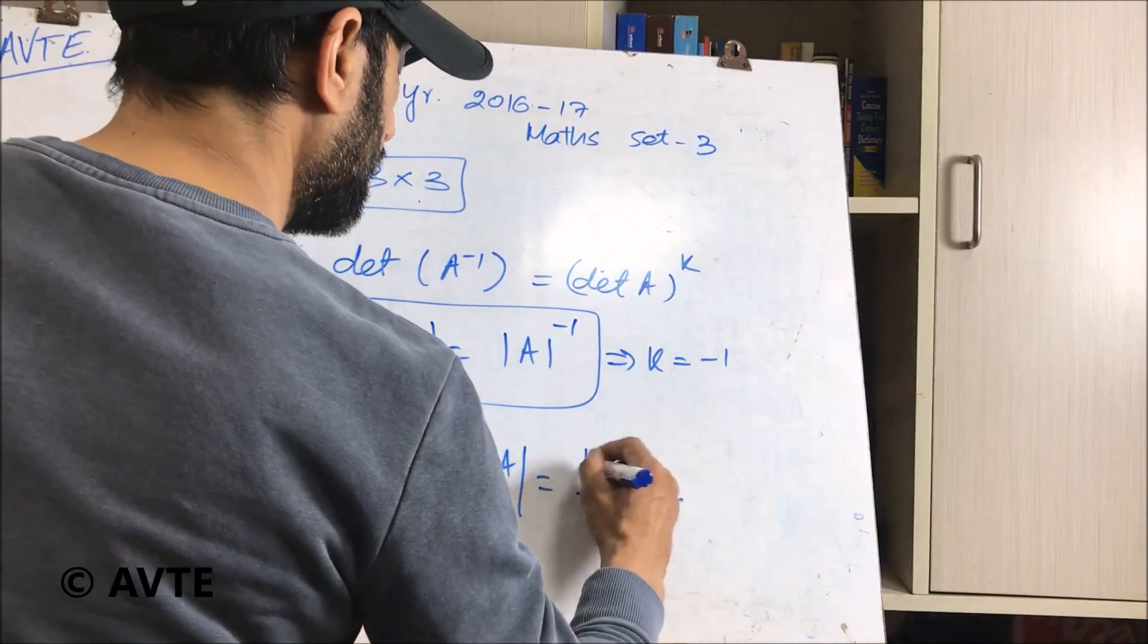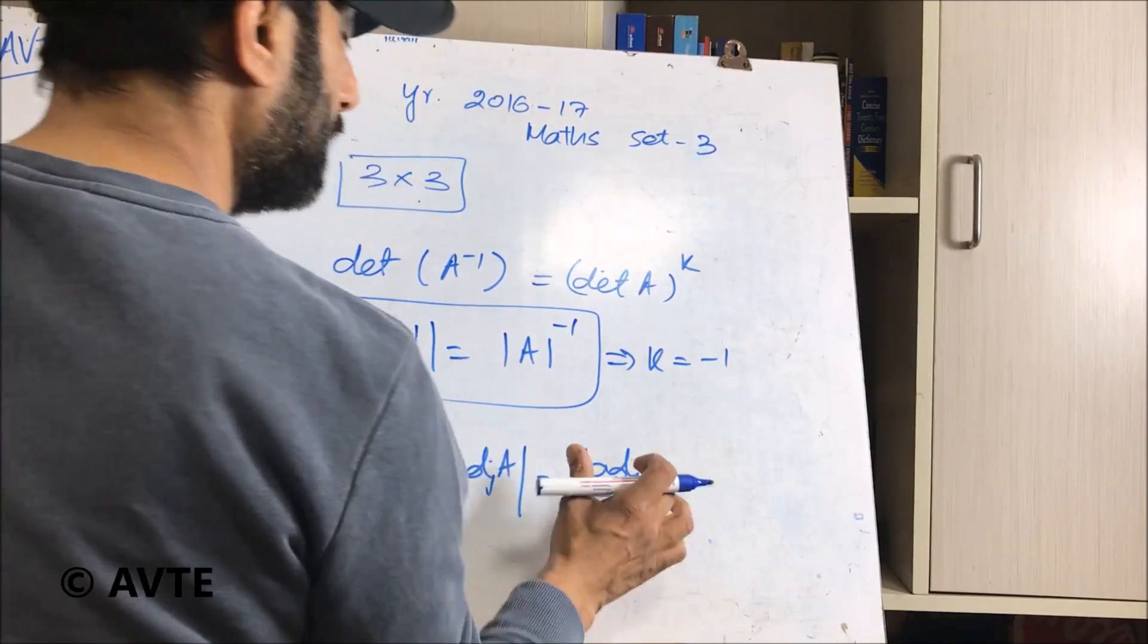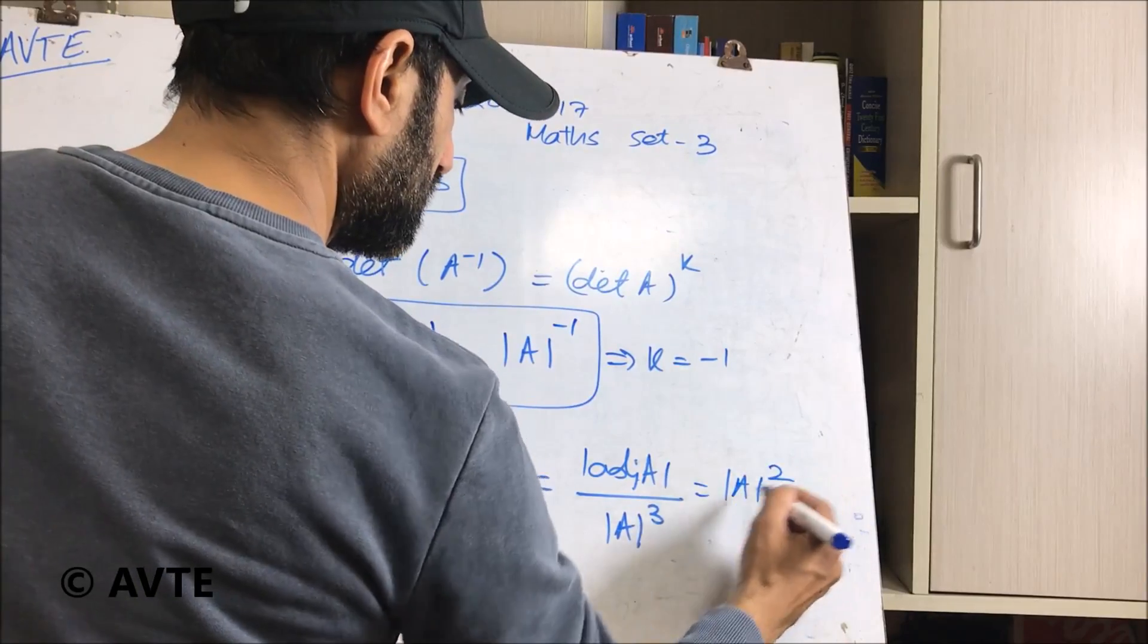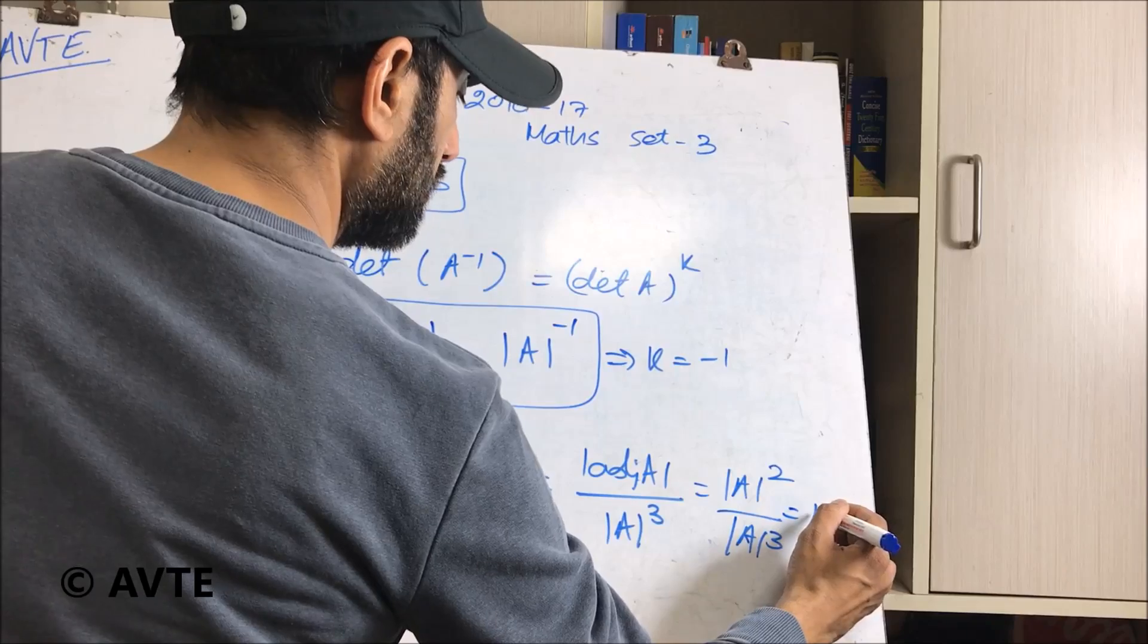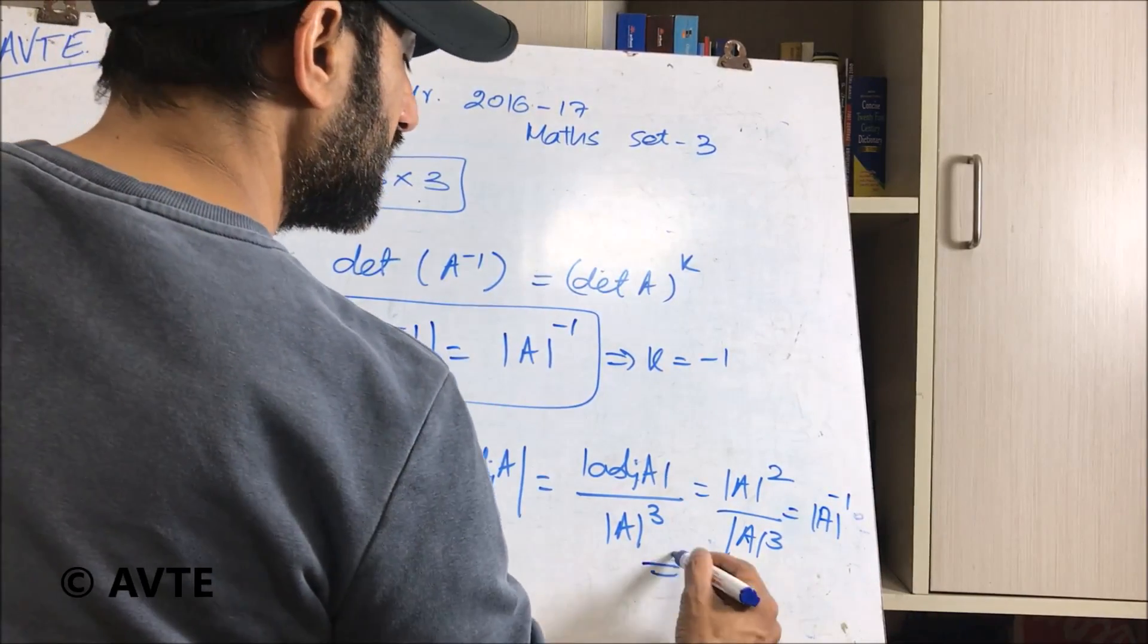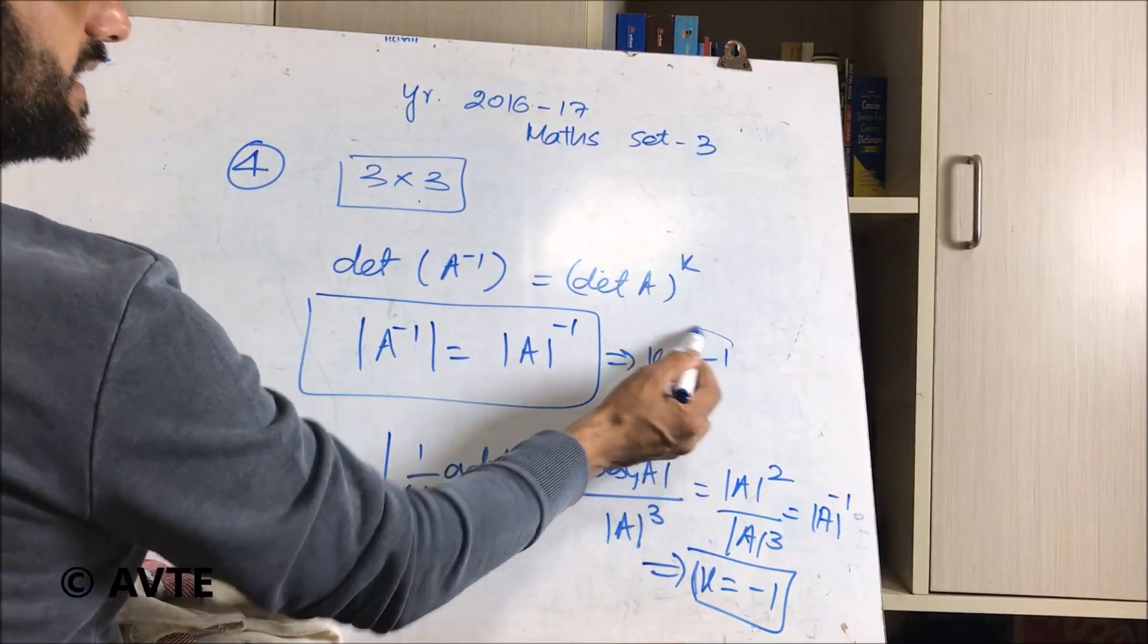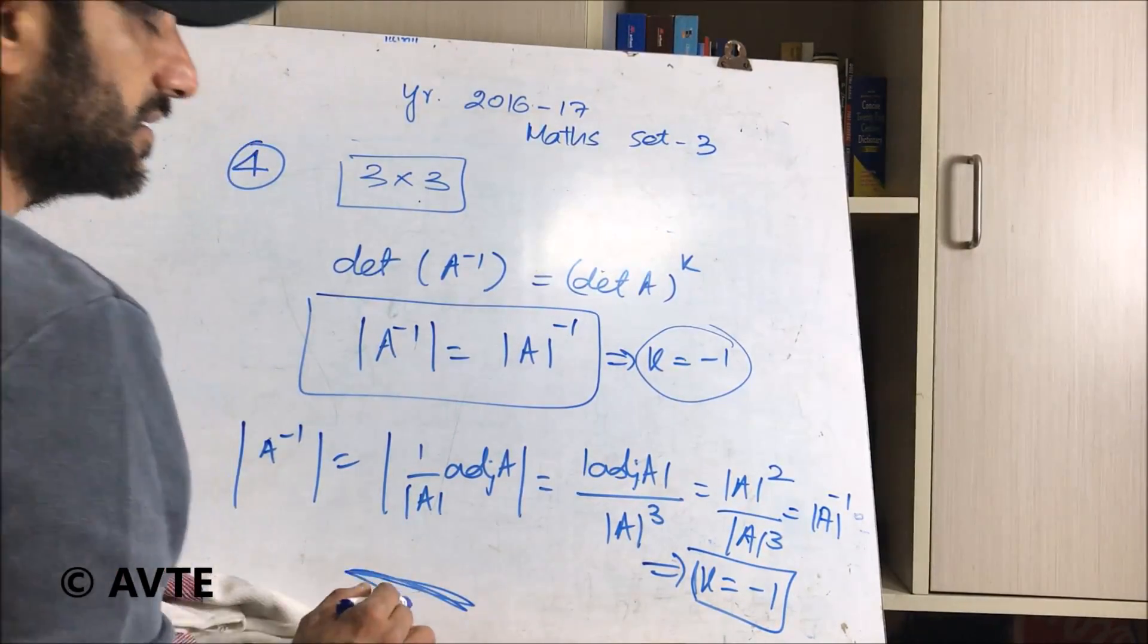Since the order is 3 and mod of adjoint A is n minus 1 whole square, because n is 3, so with this also mod A raised to power minus 1 comes and k is also minus 1. So if you know the answer directly, because it's a 1 marker you can write it directly, or you can also derive it.